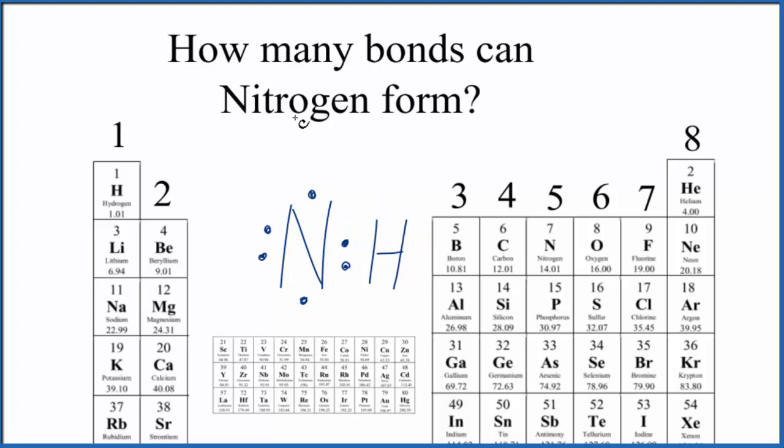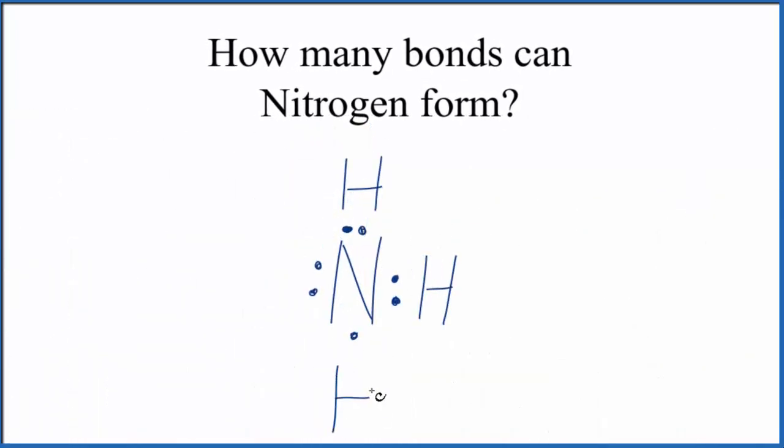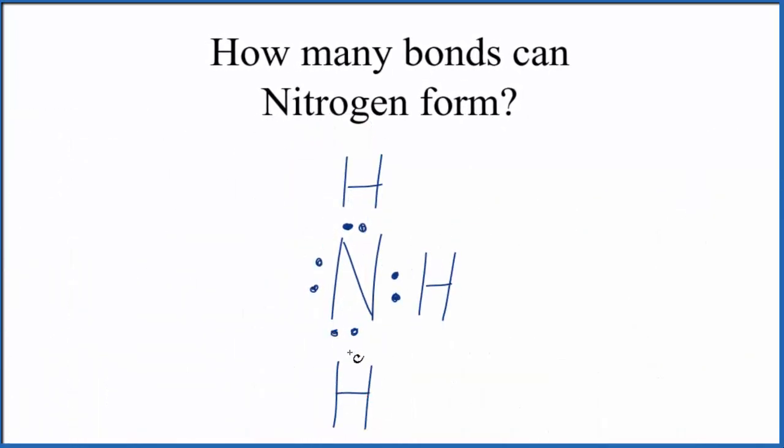We could put another hydrogen up here, sharing its one valence electron. And then let's get rid of this to give ourselves some room. Our last hydrogen we'll put down here, and that'll share an electron. So now each hydrogen has two, which is good, and the nitrogen has eight, it has an octet. So nitrogen here is forming three covalent bonds.